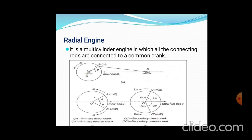Along the direction of the stroke, the force is MRω²cosθ. We have to consider the primary direct crank and primary reverse crank, and also the secondary direct and secondary reverse crank. The basic difference is that for primary, we consider only θ, while for secondary, we consider 2θ — that is, the angle is 2ω. This is the case of primary and secondary with the common crank.